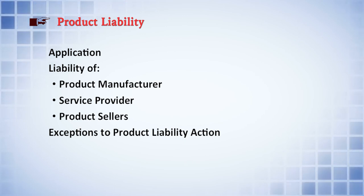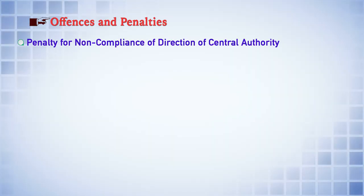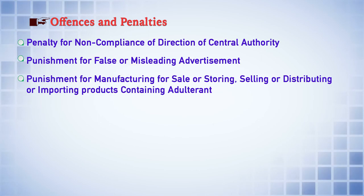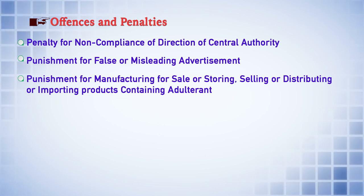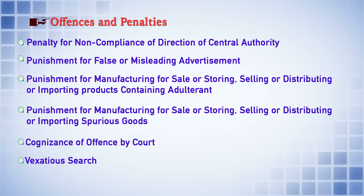Regarding product liability, the law provides for initiating liability against the product manufacturer, service provider, and product seller. On offences and penalties, the law provides for: penalty for non-compliance with directions of the central authority; punishment for false or misleading advertisement; punishment for manufacturing, storing, selling, distributing, or importing products containing adulterants; punishment for manufacturing, selling, storing, or distributing spurious goods; and provisions for search and seizure. With this, we conclude this presentation on the salient features of the Consumer Protection Act. Please read the material carefully and you may benefit from it. Thank you very much.